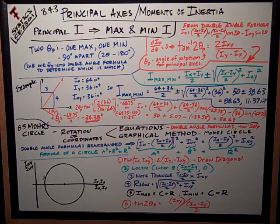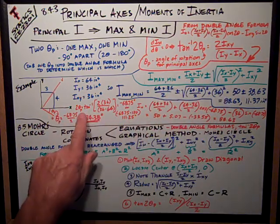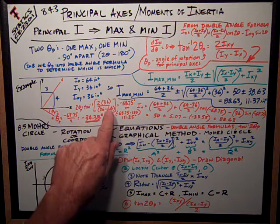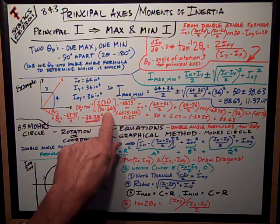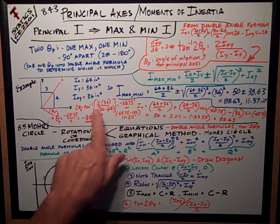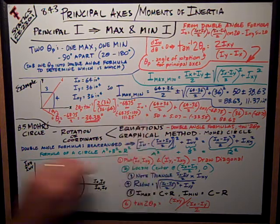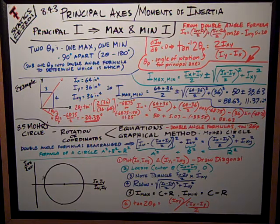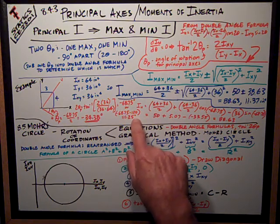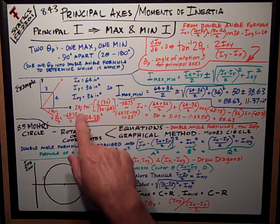I can also solve for what that angle is using this formula, which is 2 theta_p is equal to the tangent inverse of this expression, 2 times 36, which is I_xy over 36 minus 64. I've got to be consistent with my sign conventions. This is going to give me a negative number on the bottom. Plugging that into my calculator, I get that 2 theta_p is equal to negative 68.75 degrees. I can subtract 180 degrees from that or add 180 degrees to it, and I get 111.25 degrees. And so, those are my two angles, double my angles of my principal angles of rotation.